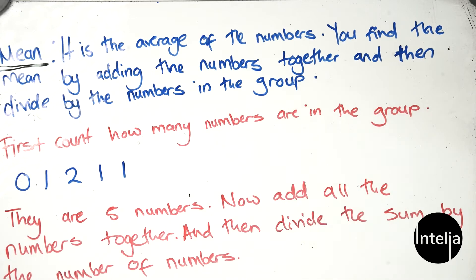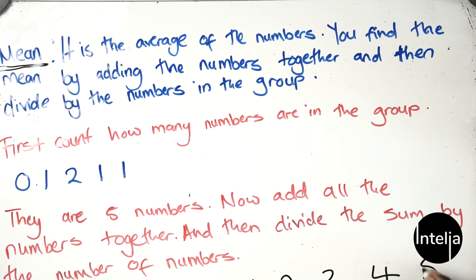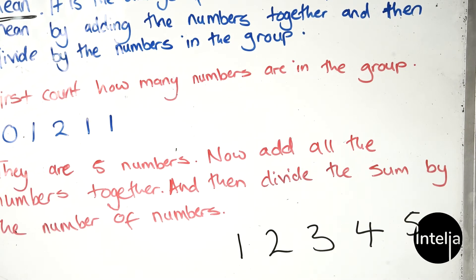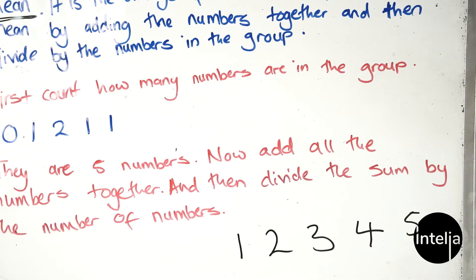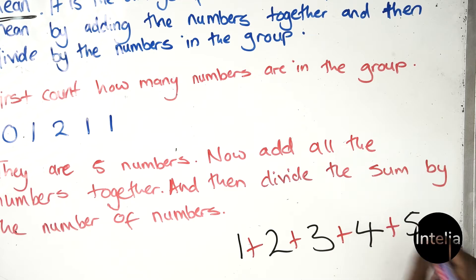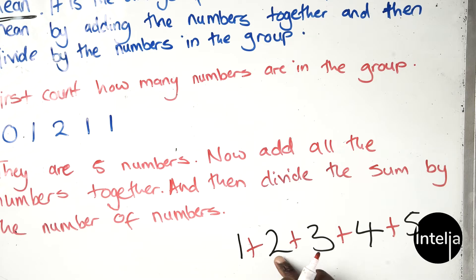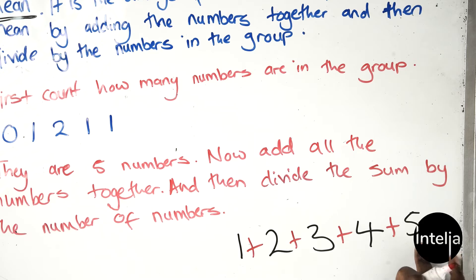For example, if you're given numbers like one, two, three, four, five and they tell you to find the mean, you say one plus two plus three plus four plus five. Two plus one is three, plus three is six, plus four is ten, plus five is fifteen.